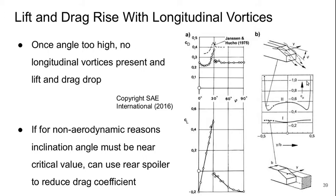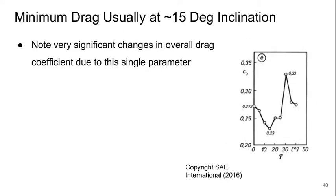On the far right of the plot is pressure coefficient, and we can see reduced pressure at the edges due to the presence of the longitudinal vortices, which creates low base pressure. Sometimes, for non-aerodynamic reasons, the inclination angle has to be near the critical value — in that case, a rear spoiler can be used to reduce the drag coefficient. Usually the minimum drag occurs at about a 15 degree inclination angle. This inclination angle is the single parameter that has the biggest effect on overall vehicle drag coefficient.